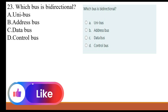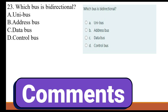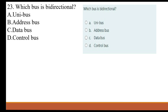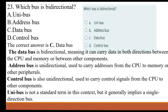The correct answer is C, Data Bus, because the others are unidirectional. The data bus is bidirectional, meaning it can carry data in both directions between the CPU and memory or between other components. The control bus is unidirectional, used to carry control signals from the CPU to other components. Unibus is not a standard term in this context but generally implies a single-directional bus.